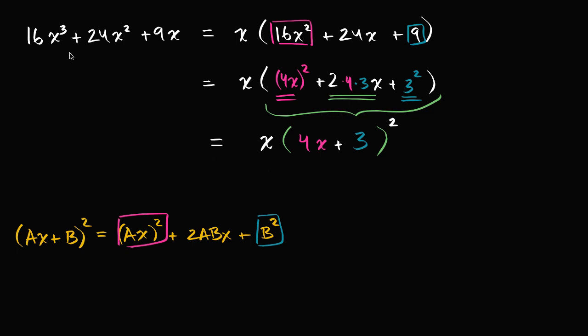And the key realizations here is, well one, you know, what can I factor out from all of these terms? I could factor out an x from all of those terms. And then to realize that what we had left over was a perfect square, really using this pattern that we were able to see in previous videos.